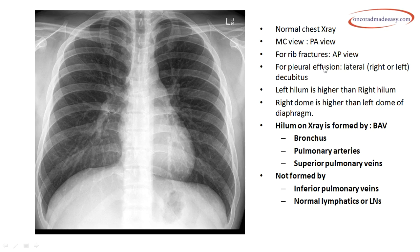For pleural effusion we do the lateral decubitus view — left or right lateral decubitus. Remember, the left hilum is higher than the right hilum, and the right dome of the diaphragm is higher than the left dome. On a normal X-ray, the hilum is formed by BAV: the right and left bronchus, the pulmonary arteries, and the superior pulmonary veins.